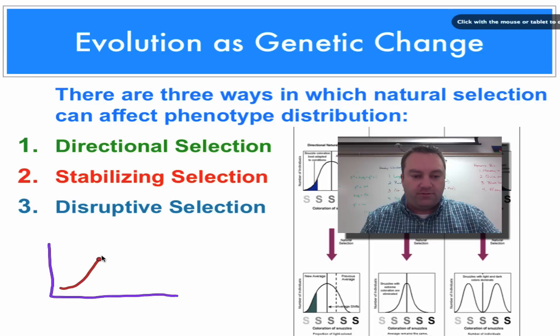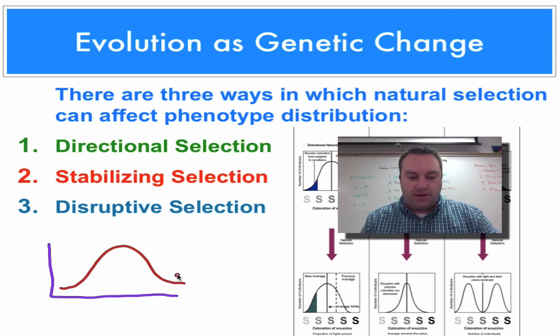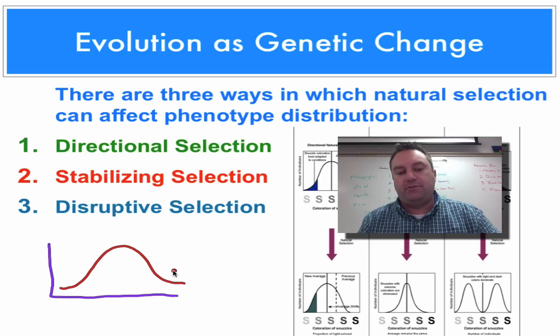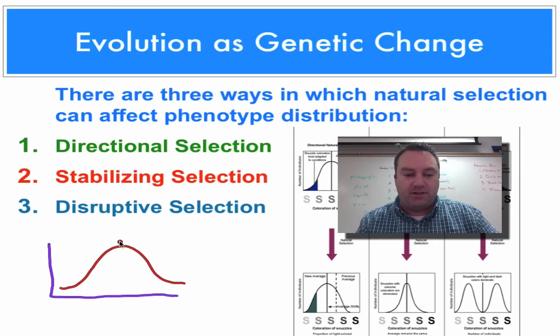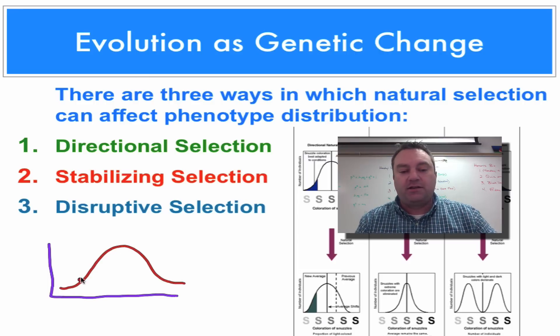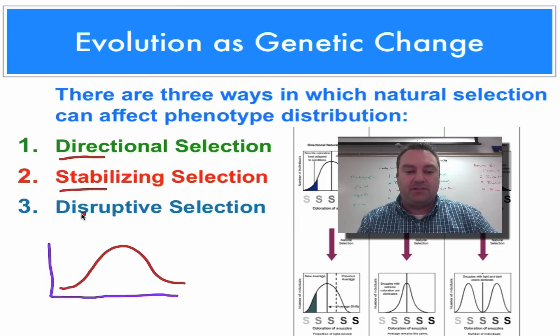So think of the bell curve where you have some extremes over here. So like we'll say this end is where giraffes have really long necks. Over here are short neck giraffes. And then these are the ones who have just the average giraffe neck size. Now natural selection is going to affect changes in this curve in three different ways. It's going to do that through directional selection, stabilizing selection, and disruptive selection.